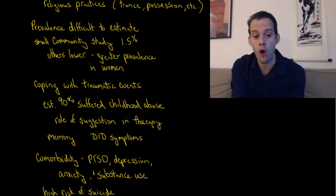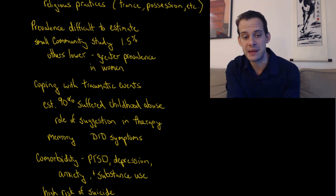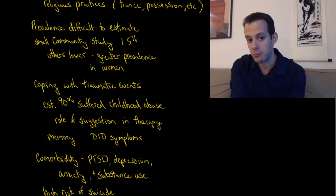One explanation for dissociative identity disorder is that it relates to coping with traumatic events. By separating out certain experiences from one's sense of identity, that might allow them to cope with certain traumatic events. It's estimated that about 90% of people who get this dissociative identity disorder diagnosis also suffered from childhood abuse. So perhaps by splitting their identity into multiple identities, that was a way of coping with this abuse. Although this can be very difficult to assess and it's very controversial because it brings in the role of suggestion in therapy. If these people are going to therapy for certain symptoms, it might be the case that memories of childhood abuse are being suggested to them by the therapist and may not necessarily be accurate.